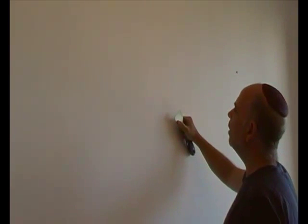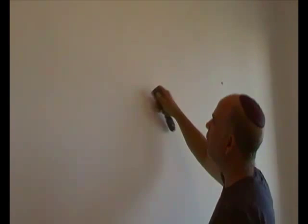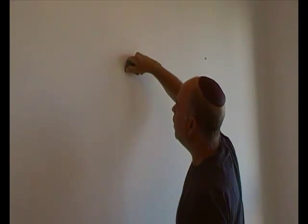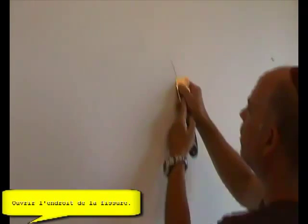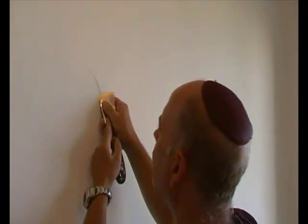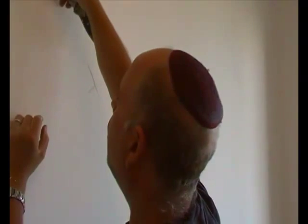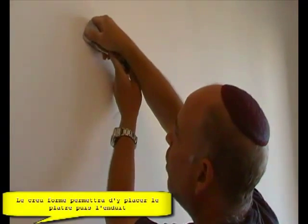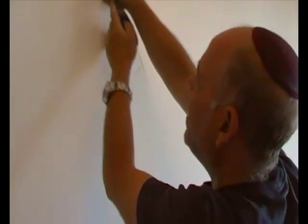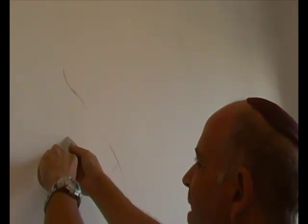Here we are in the presence of a crack on a wall. First of all, to repair the crack, we need to open the area of the crack. This allows us to have a hollow to be able to re-fill the plaster and then make the crack disappear, which is superficial, as you can see here. This allows us to return to the cement and then repair the crack.